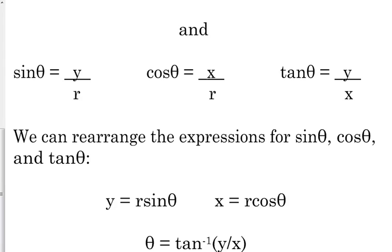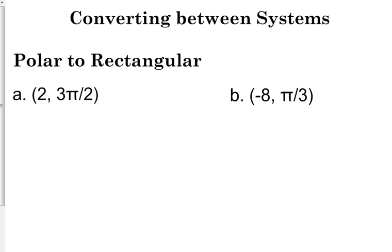If you rearrange those, it's the exact same stuff we just did with vectors. The y coordinate is r times the sine of the angle, the x coordinate is r times the cosine of the angle, and the angle can be found using the inverse tangent of y over x. That's why this is going to flow pretty naturally right after we do vectors — it's the exact same stuff, just a new application.